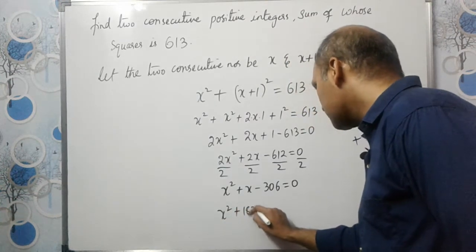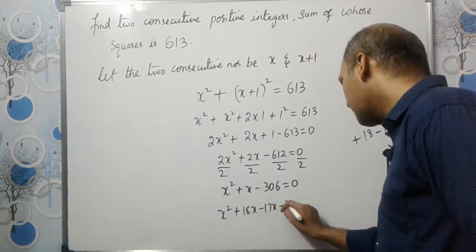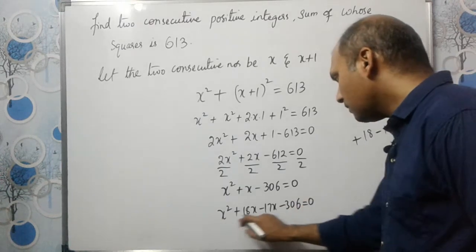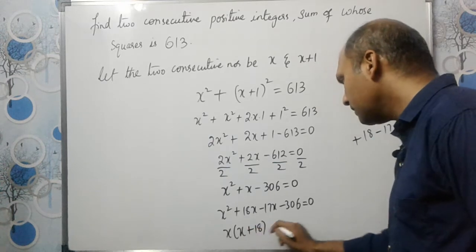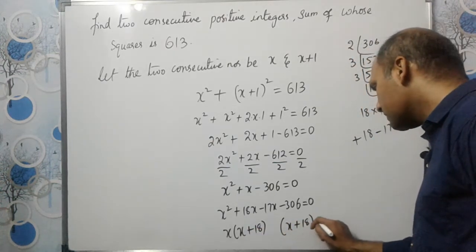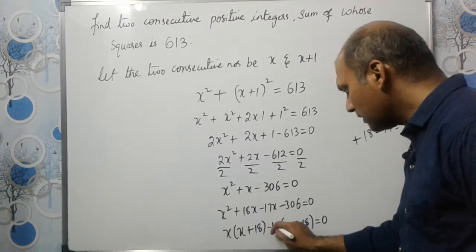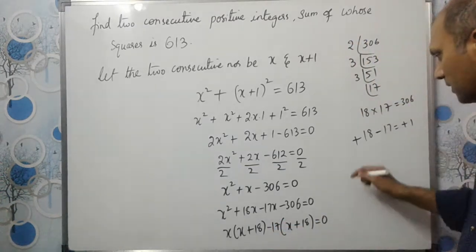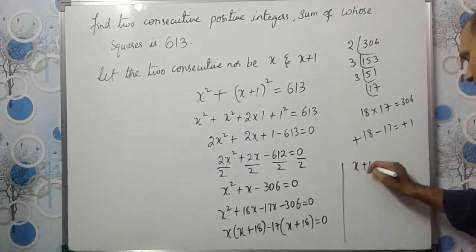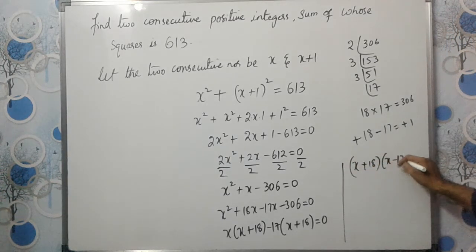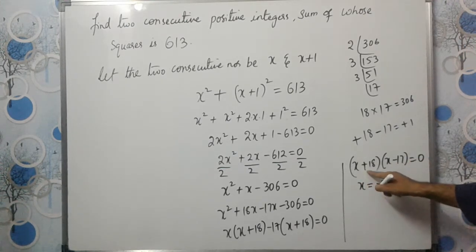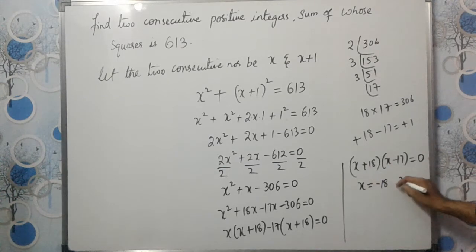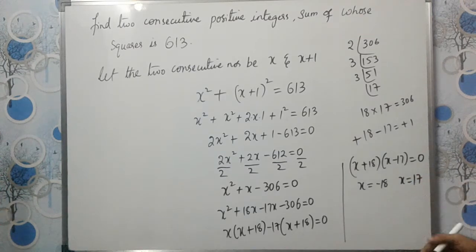So we write: x squared plus 18x minus 17x minus 306 equals 0. Taking x common from the first two terms gives x(x plus 18), and from the last two terms, minus 17(x plus 18), so we have (x plus 18)(x minus 17) equals 0. Therefore x equals minus 18 or x equals plus 17.